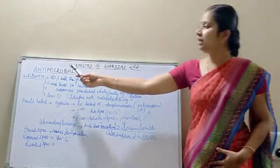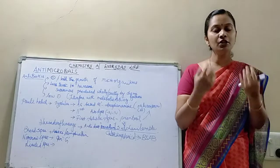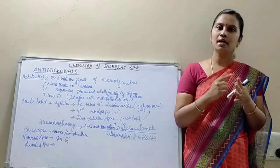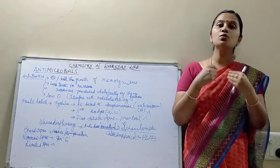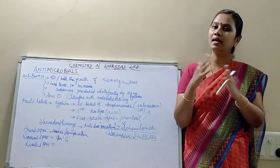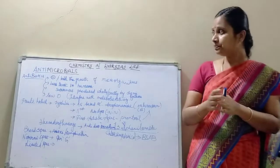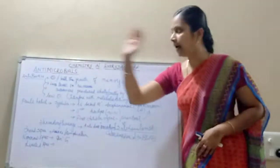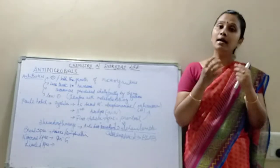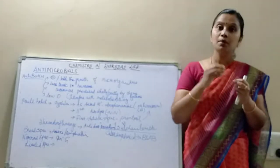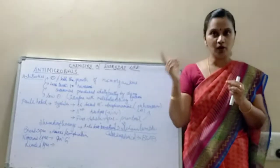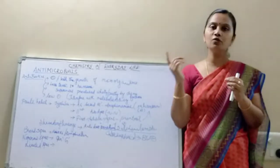Now we come to the topic of antimicrobials. As humans, we are continuously encountered with microbes like bacteria, fungi, virus, and parasites. Agents produced against bacteria are called antibacterial agents; against viruses, antiviral; antifungal and antiparasitic. The previous definition of antibiotics was: substances produced from one microorganism used to kill or inhibit the growth of other microorganisms.